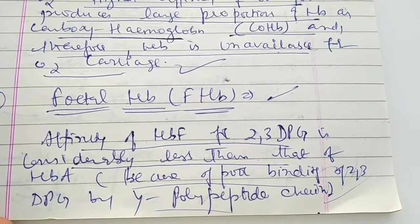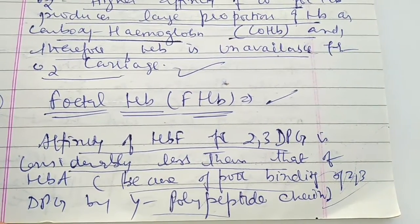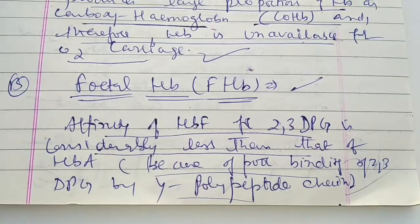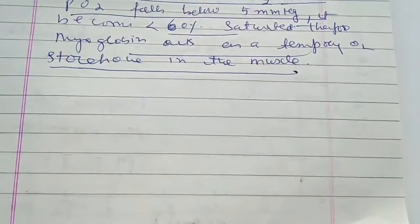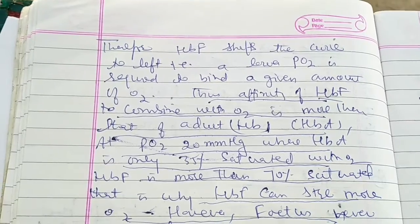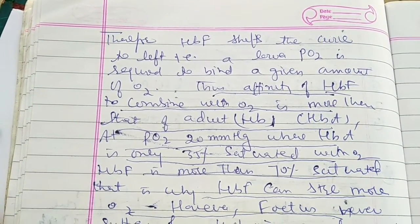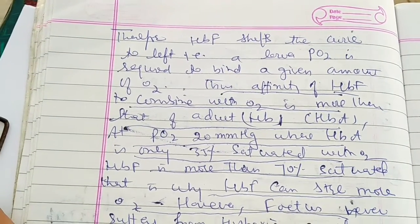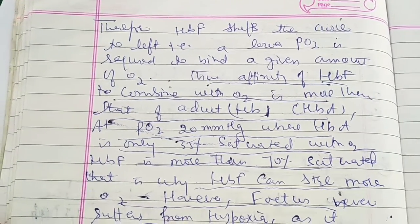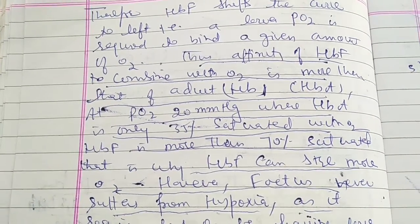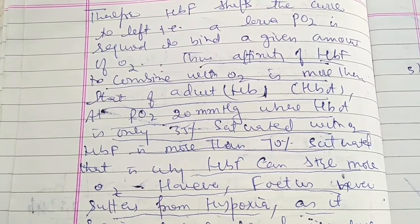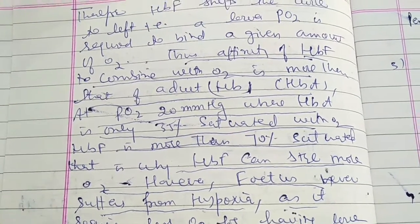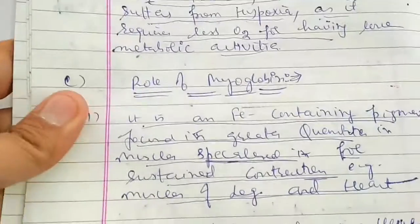Fetal hemoglobin (HbF) also has more affinity for oxygen and less affinity for 2,3-DPG compared to adult hemoglobin. Fetal hemoglobin shifts the curve to the left — meaning a lower partial pressure is required to bind a given amount of oxygen. Since more oxygen binds with fetal hemoglobin, fetuses avoid hypoxia. Fetuses and children also have a lower metabolic rate and do not need to face hypoxia, which is avoided due to hemoglobin F.